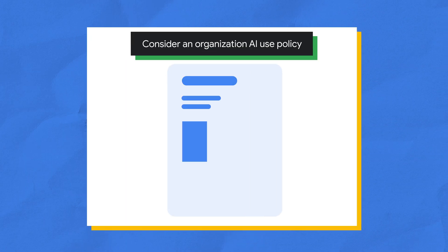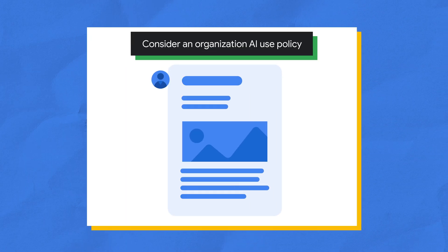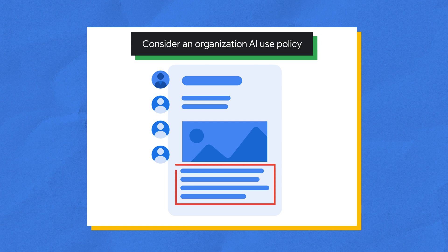Consider building an AI use policy at your organization so that responsible use of AI is embedded across roles and responsibilities. A policy could include both principles on intended use cases for generative AI, and actionable information that concretely describes how all employees can abide by those principles in their work. It's important to remember that any prompts or data you share with AI tools can be used to further train the LLM, so make sure you don't include sensitive organization or beneficiary data.